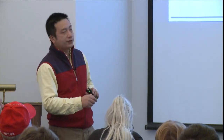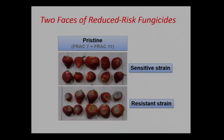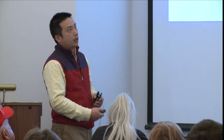We have found resistance in Botrytis cinerea to all those single-site fungicides. As an example of the impact of fungicide resistance: berries treated with Pristine and then inoculated with a sensitive strain — the isolate was not able to infect and develop lesions on strawberry fruit. However, if the strawberry fruit treated with Pristine is inoculated with a resistant strain, it will develop lesions on the fruit.